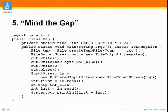Then we open a BufferedInputStream wrapping a FileInputStream on the same file — you don't get buffering for free, so if you want buffered IO you do this wrapping, which is the decorator pattern. We read the first byte into an int. Then we skip the size of the gap which is 10K. We read the last byte — presumably 2 — and the first was 1. Finally we print first plus last, so that's 1 plus 2 which is 3.